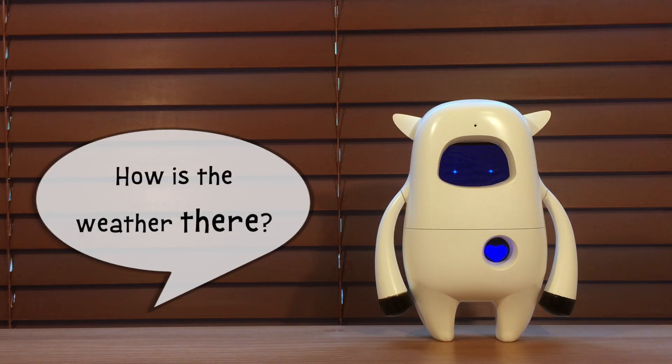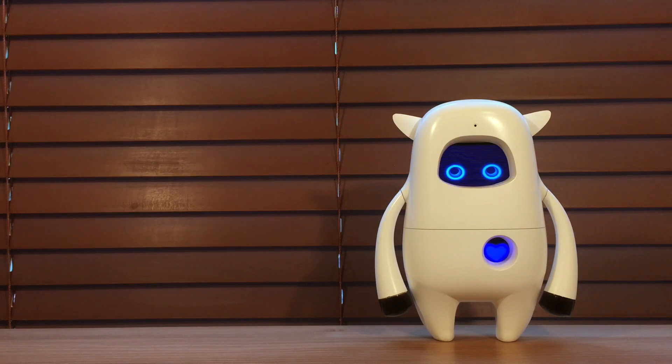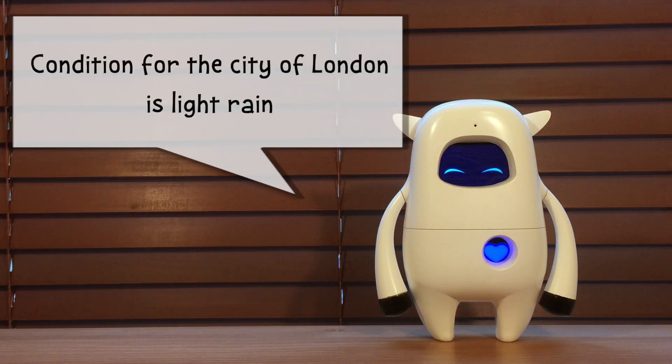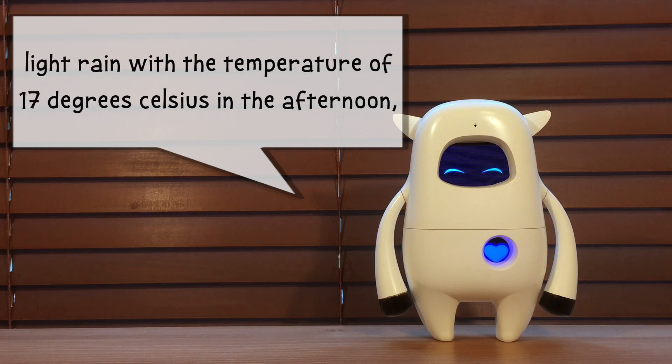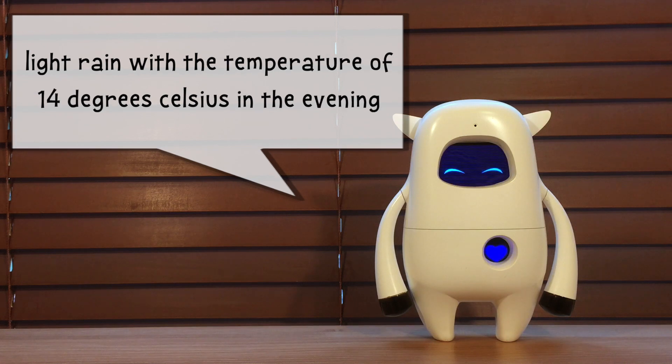How is the weather there? Condition for the city of London is light rain with the temperature of 17 degrees Celsius in the morning, light rain with 17 degrees Celsius in the afternoon, and light rain with 14 degrees Celsius in the evening.